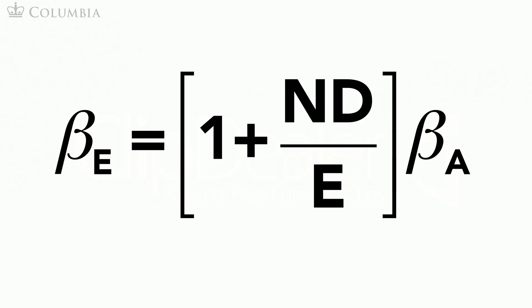In this formula, beta sub e stands for beta equity. This is the beta that contains both the business risk and the financial risk. When we look up a beta in Yahoo or Google Finance, we get beta equity. It is also called levered beta because this is the beta that includes the effect of debt on the risk of equity.